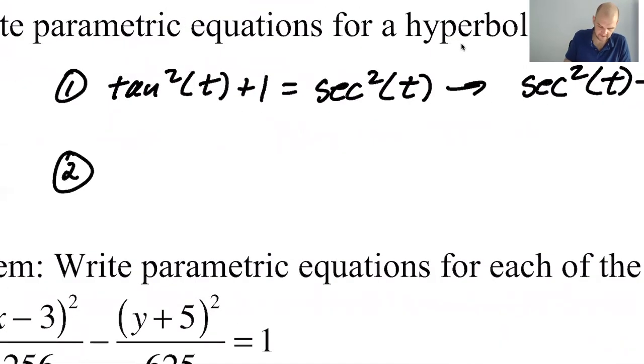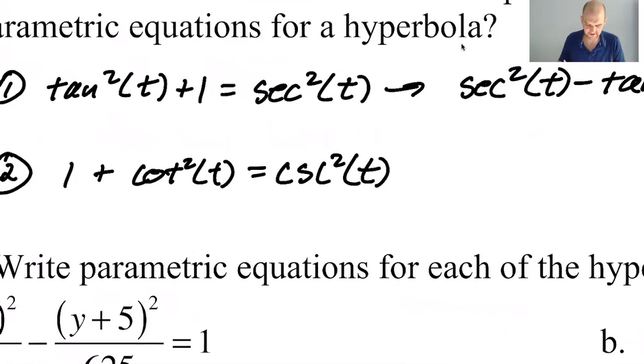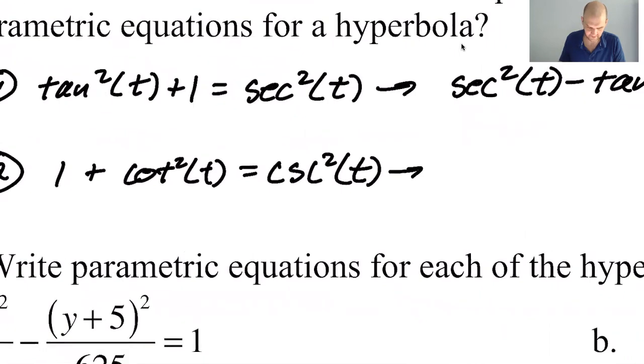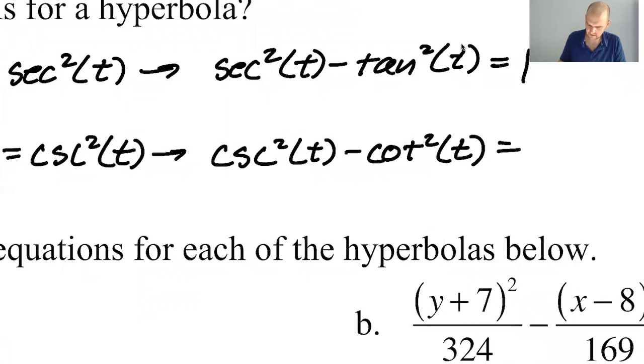The other one is that 1 plus cotan squared equals cosecant squared. I don't know why I put the 1 in a different place. When you originally derived them, the 1 is in a different place. This would be cosecant squared minus cotan squared equals 1.